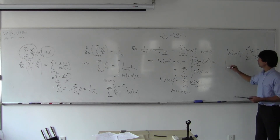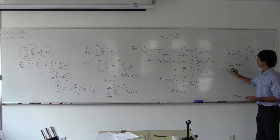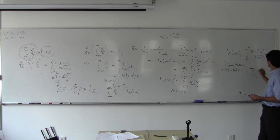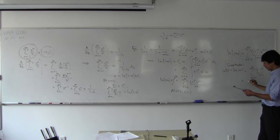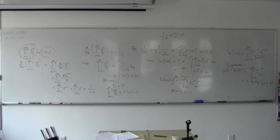In particular, natural log of (1 plus 1) — that's to say the natural log of 2 — equals summation (negative 1) to the n over (n+1), from n=0 to infinity. That's 1 minus 1/2 plus 1/3 minus 1/4 plus 1/5 minus 1/6, et cetera — which is that funny thing we mentioned at the very beginning.